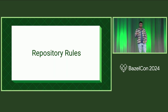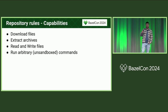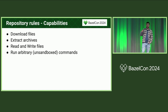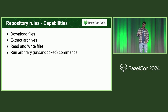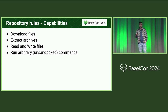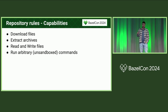Next, let's talk about how repository rules actually work and why they're awesome and not scary. They have a lot of capabilities. When you run a repository rule, it fills a directory, and it can do so using many different methods: it can download files from the internet, extract archives, and also read and write files — which is super useful because you can, for example, read a log file and extract expected hashes and URLs from it. You can also run arbitrary unsandboxed commands, which is kind of scary and should be used with care, but it's super powerful — it means you can basically do anything.